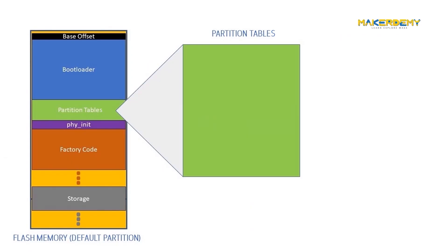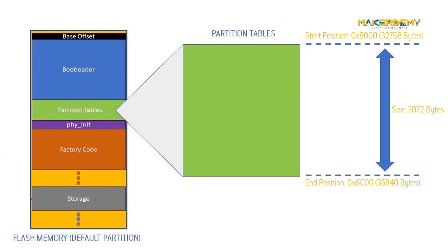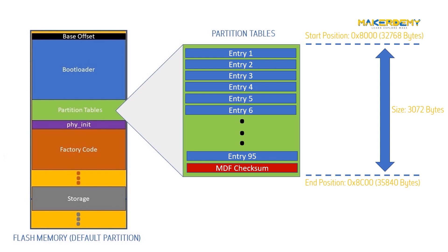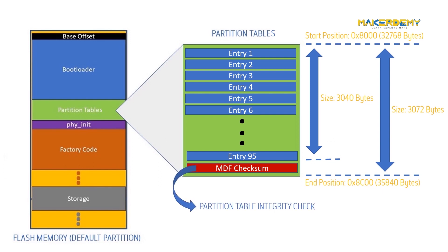The partition table starts at a default offset of 32,768 bytes. It has a size of 3072 bytes with a maximum of 95 distinct table entries. Each table entry is 32 bytes long. Thus, all the 95 entries together take 3040 bytes. The last 32 bytes are MDF checksum used for checking the integrity of the partition table.